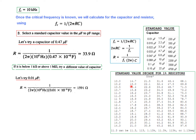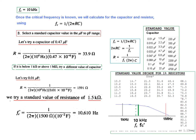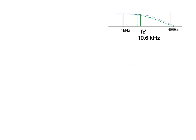1591 Ω is not a standard value. Looking at the standard resistor list, the nearest standard value is 1500 Ω (1.5 kΩ). We could also try 1540 Ω or 1580 Ω, but 1.5 kΩ is simpler to work with. Using R = 1.5 kΩ and C = 0.01 µF in the fc formula, the new cutoff frequency becomes 10.6 kHz.